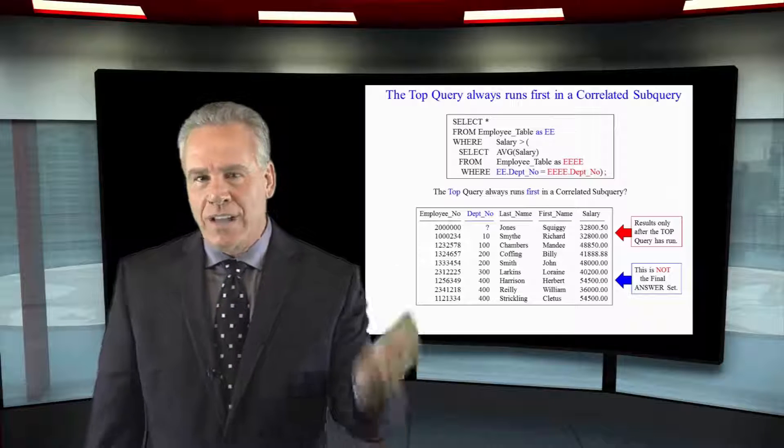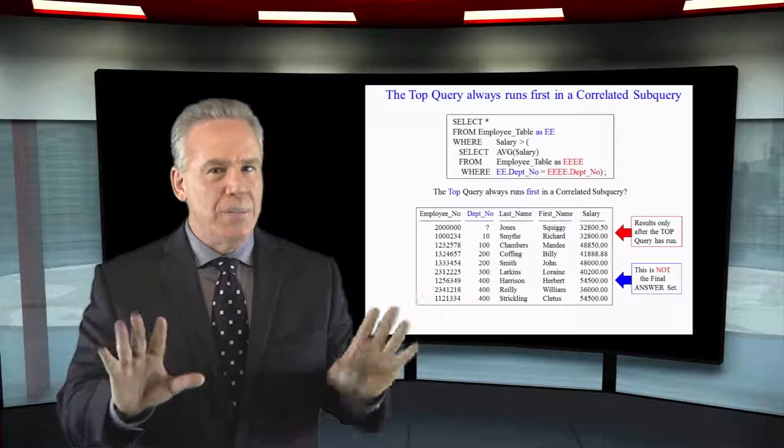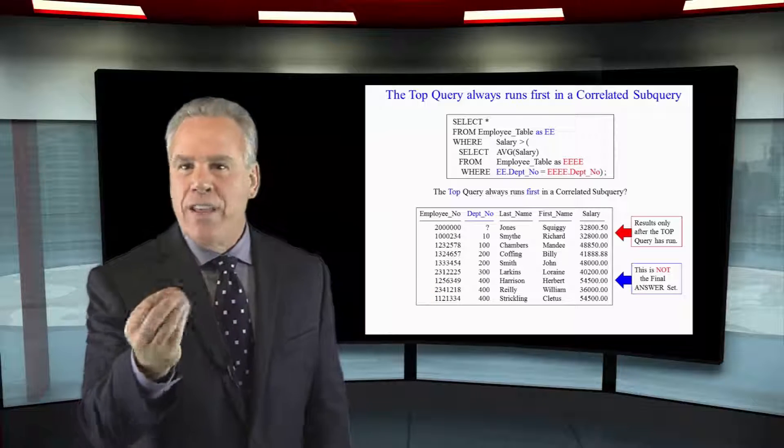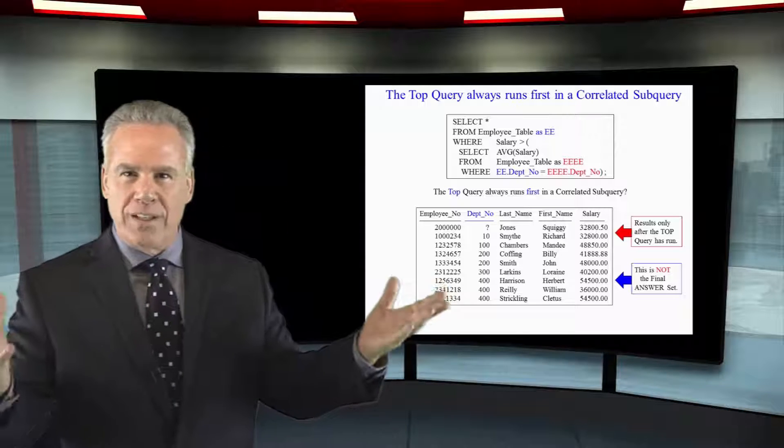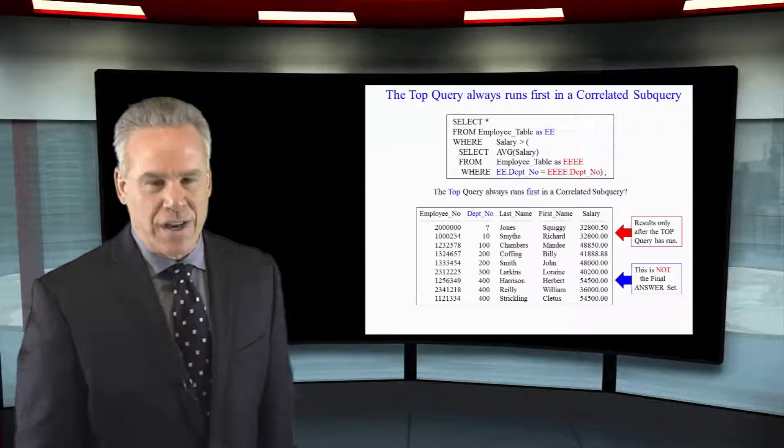That's why the top query must run first. In some databases, it doesn't work so well. They don't want you running correlated subqueries. That's why many of you have never seen this before. But in Teradata with the parallel processing, the smarts of the parsing engine, this works perfect every time.